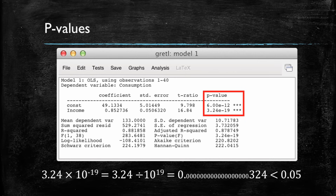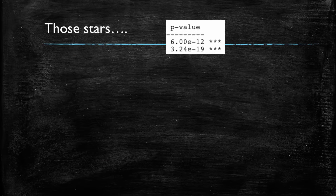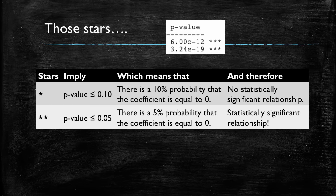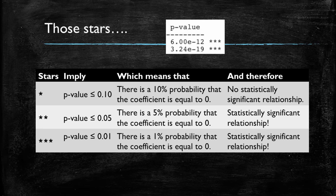Note the three asterisks or stars by the p-value. Stars are commonly used in statistical output to represent ranges of the p-value. One star generally means the p-value is below 10%. Two stars indicate the p-value is below 5% (0.05), meaning there is a statistically significant relationship because we're 95% sure zero is not within our confidence interval. Three stars, as in our case, mean the p-value is below 1% — and remember our p-value was insanely small — meaning there's less than a 1% probability that the coefficient is zero. In other words, we're very, very sure there's a statistically significant relationship.